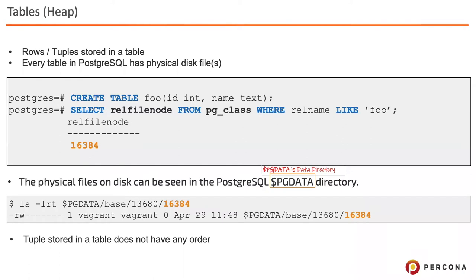The heap does not have any order. When you store data like 1, 2, 3, 4, 5 and select it back, it's not necessarily in that order — because you can delete data, reinsert data, or update data. There is no guaranteed order of data on disk. It's totally unordered data.